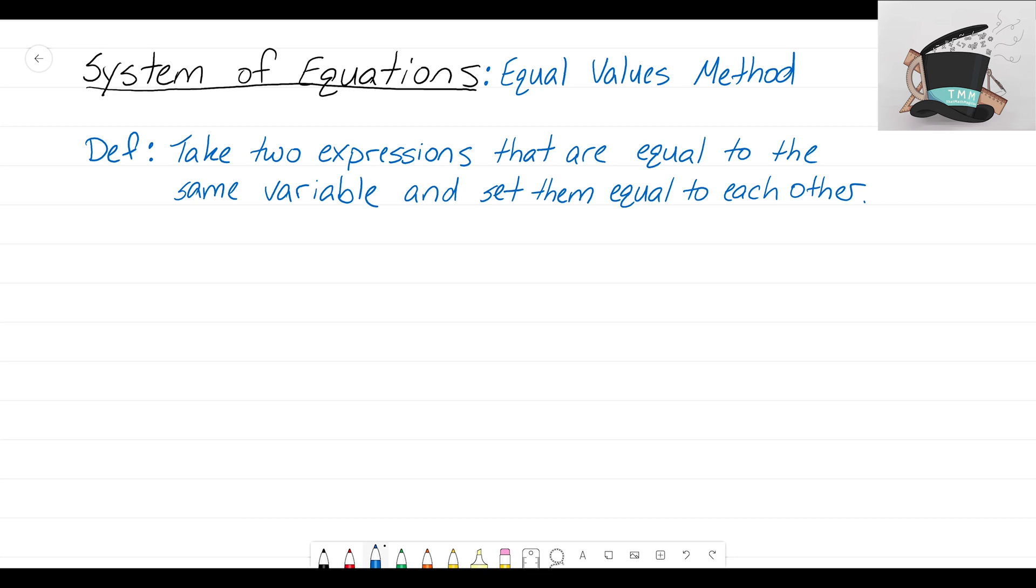Let's look at those two different equations that we used in the previous video where we introduced the system of equations and see if we can apply this new method called the equal values method. Our first equation was y equals 2x plus 1, and our second equation was y equals negative 3x plus 6.